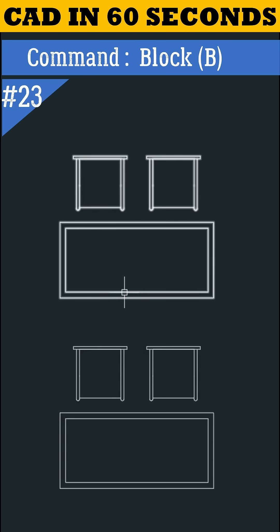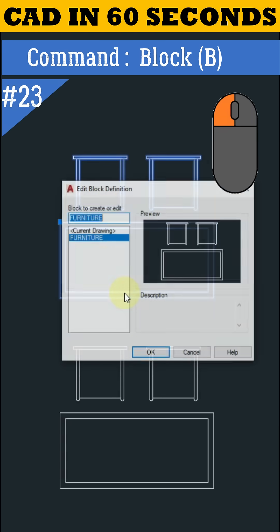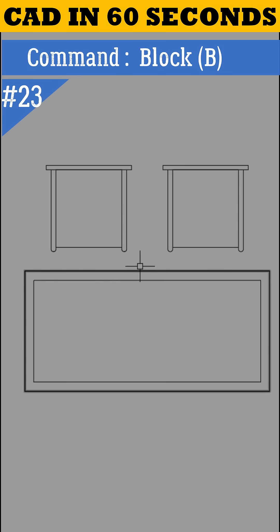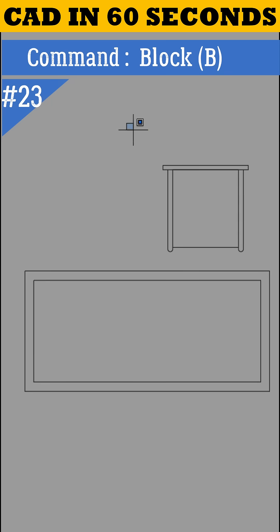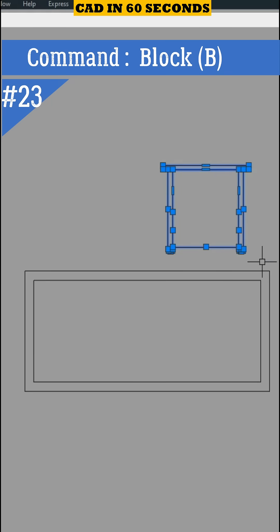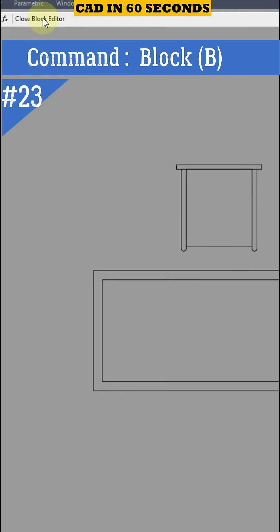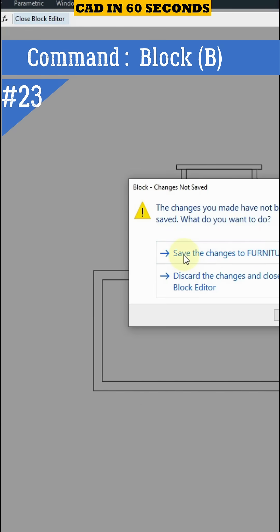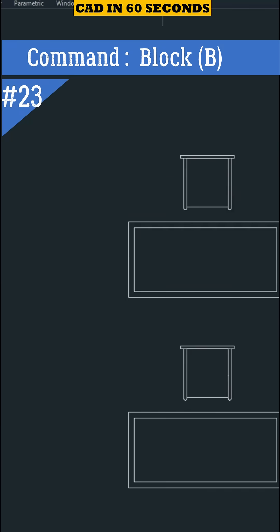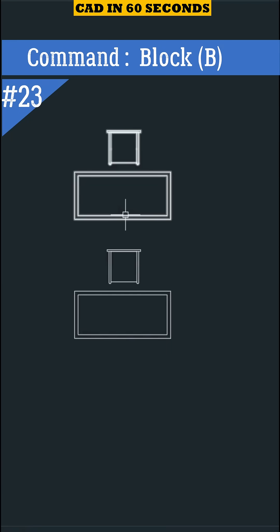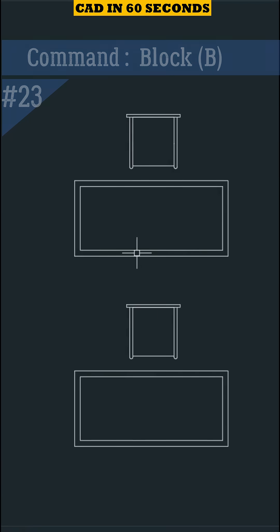To make changes in a block, double click on any block and click on OK. Let's delete this chair and move the other chair to the center. After making changes, click on close block editor and save changes. We can see the changes are updated in the other block. That's it from this tutorial. Thanks for watching.